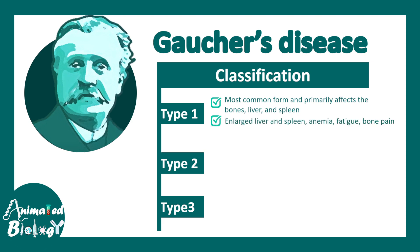In type 1, hepatosplenomegaly — or enlarged spleen and liver — is quite common, along with fatigue and bone pain. The neurological symptoms are typically absent in this case.